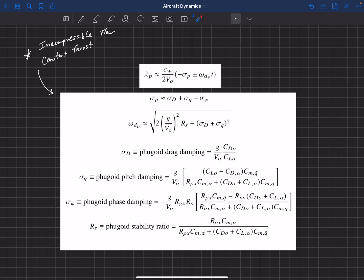And then we also have a fugoid phase damping. To be honest, I don't quite understand what the phase damping is. I'd have to go back and study that a little bit more. But it's another damping term here that he's accounting for. So there are three different sources of damping that will affect the damping of the fugoid mode.